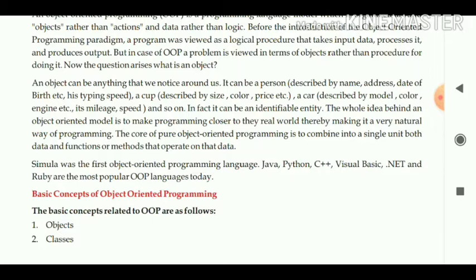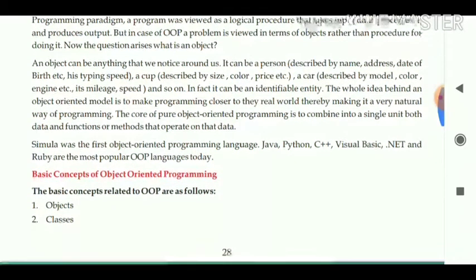For example, variables such as X and Y can be two variables, and if we are adding X and Y, then the variables and operators can be one unit in object-oriented programming.